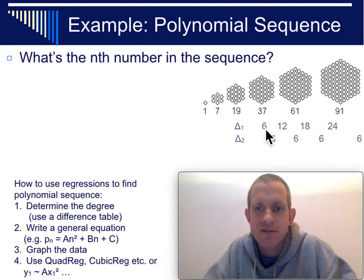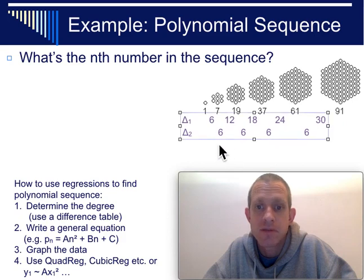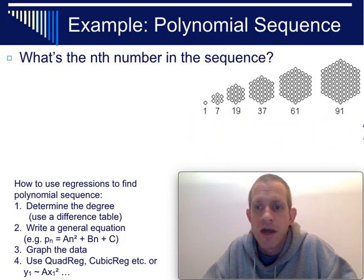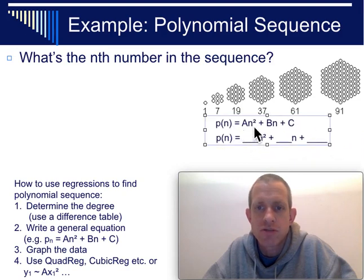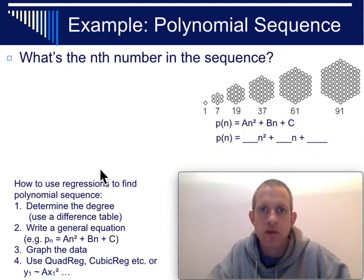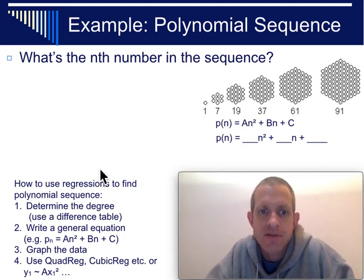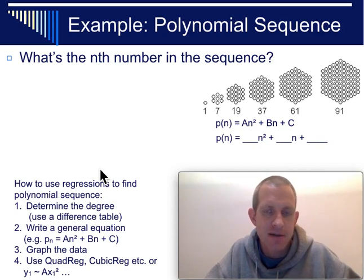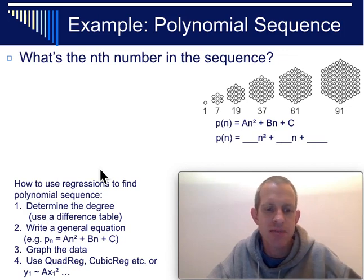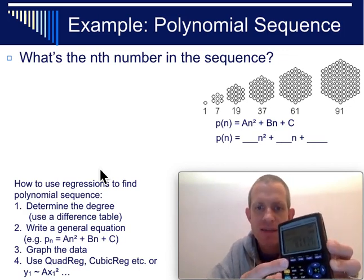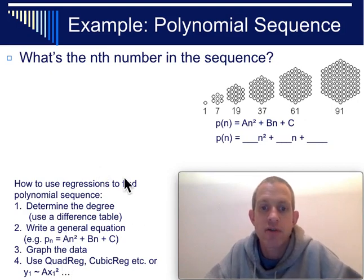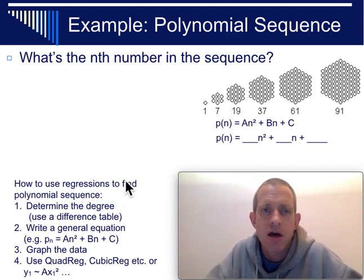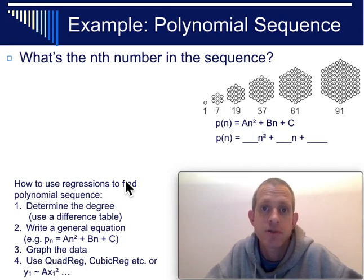And so, you do that by looking at the common differences and seeing how long does it take for them to repeat. In this case, it took two. And then, coming up with your general equation, this would be a degree 2, a quadratic. The next thing you'd have to do is graph your data. And so, if you're going to use your calculator, you'd have to go to stat and editor and type in your numbers in L1 and L2. And then, use the stat plot, which is in the y equals screen, to make that happen. And then, you can use the quadratic regression tool to make that work. Alternatively, we could use Desmos. And so, I'm going to show you using Desmos because, frankly, I like it better.